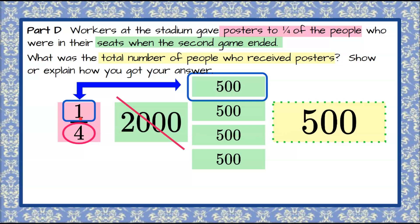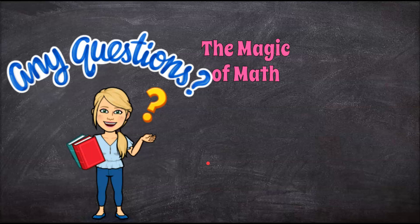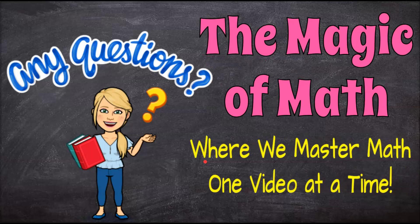You could have also solved this by multiplying, understanding it as 2,000 divided by four — taking 2,000 and dividing it into four equal parts. Thank you for joining me today to learn how to multiply fractions by whole numbers to solve a real-world problem. That's the Magic of Math, where we continue to master math one video at a time. I hope you have a great day and come back soon.